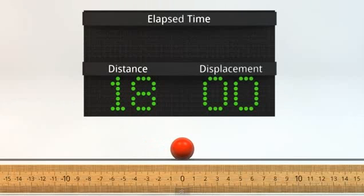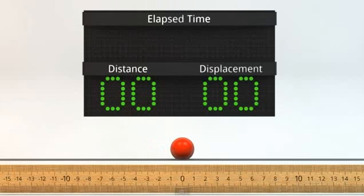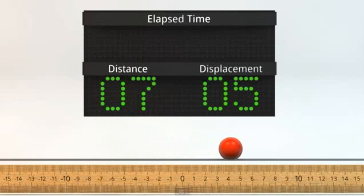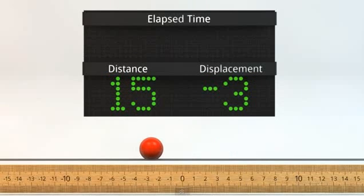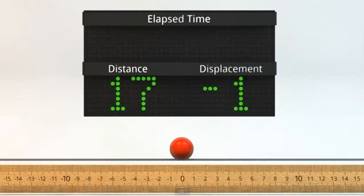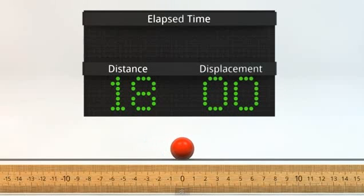Displacement tells us how far the ball ends up compared to where it started from. Look at how when the ball gets closer to zero, displacement goes down, but distance is always increasing. So we can see that the distance tells us how far we have traveled, but gives us no information on where the ball is at any time. While displacement tells us where the ball is, but on its own doesn't tell us much about how far the ball has really traveled in the past.